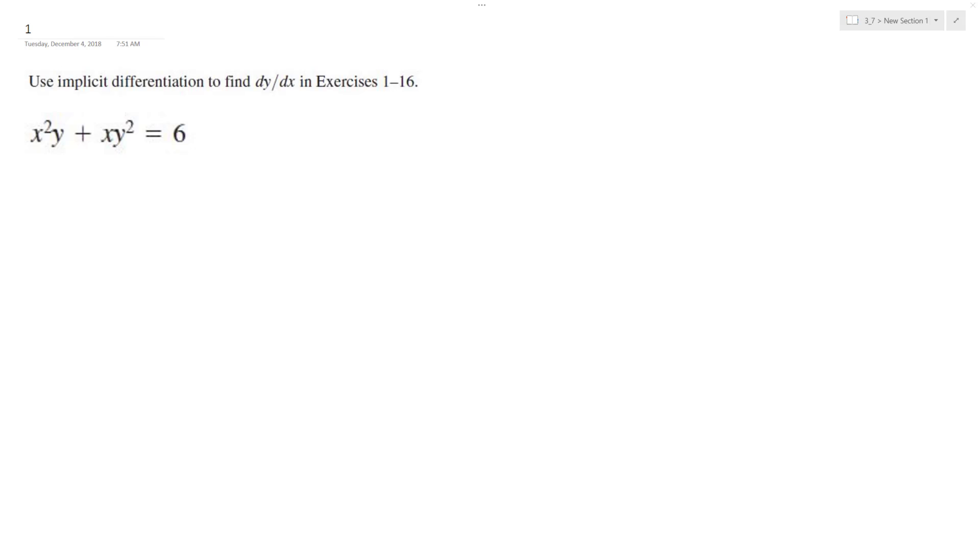So finding the implicit differentiation for this, or finding the derivative. Starting off, I am going to use the product rule for both of these. So d/dx quantity x squared y plus d/dx of xy squared equals 6.